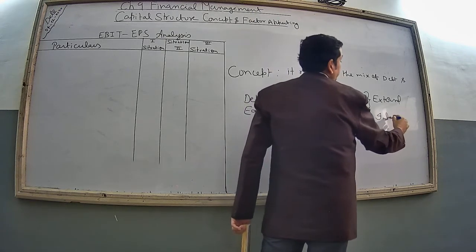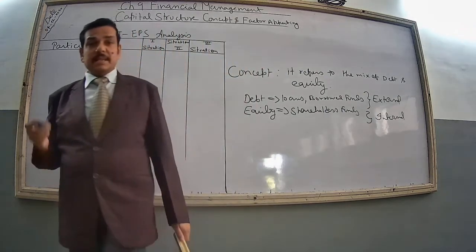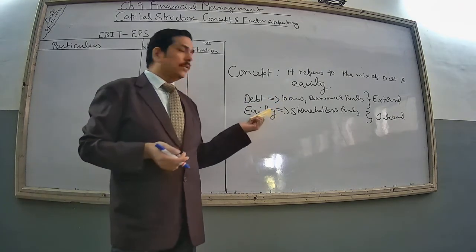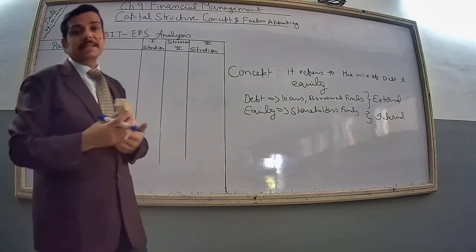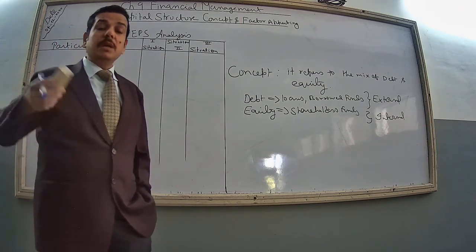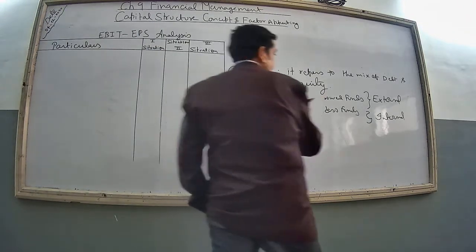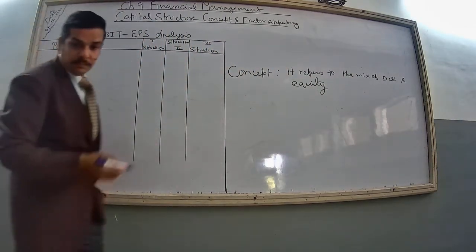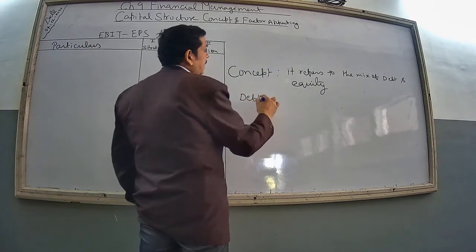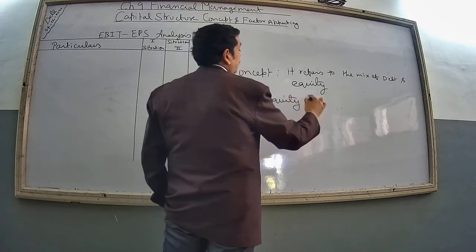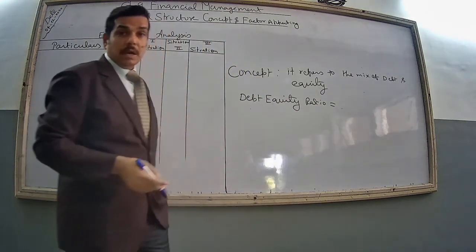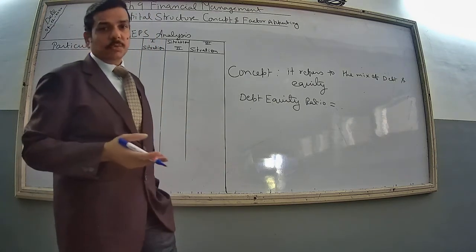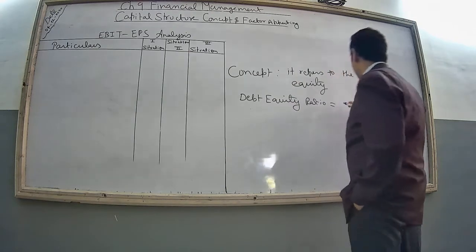So how much externally you are going to arrange capital and how much internally — external is called debt or borrowed fund, and internal is equity. The composition of debt and equity is measured by the debt-equity ratio. The formula is debt upon equity. According to industry standard, the ratio decided is 2:1, meaning for every 2 rupees of loan you are having 1 rupee of capital. You have to construct and design your capital structure according to this ratio.